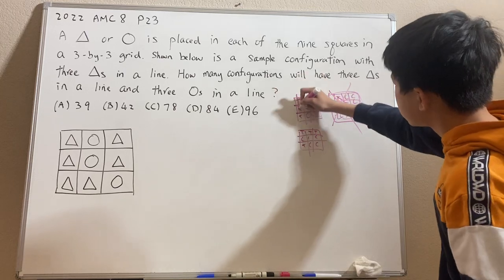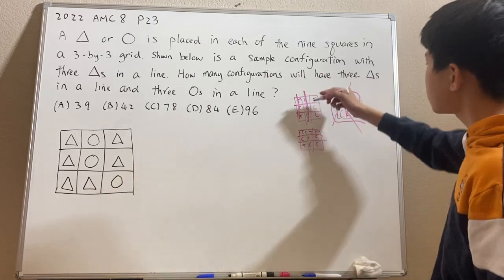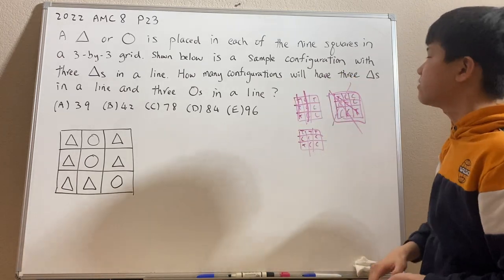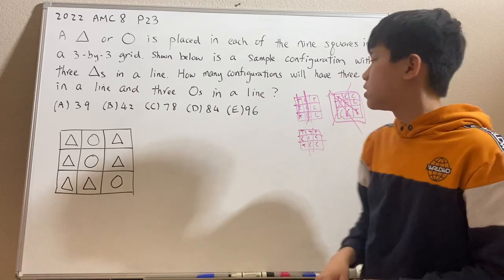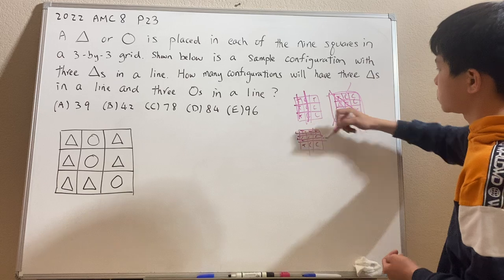And notice that if T is in a vertical line, C must also be in a vertical line. Since if C is horizontal, then it's actually not possible since the T vertical line already covers all the rows. So C has to be vertical. And similarly for horizontal, if T is horizontal, C has to be horizontal.